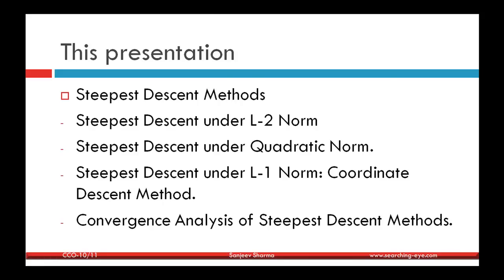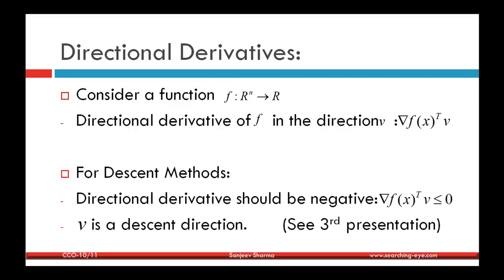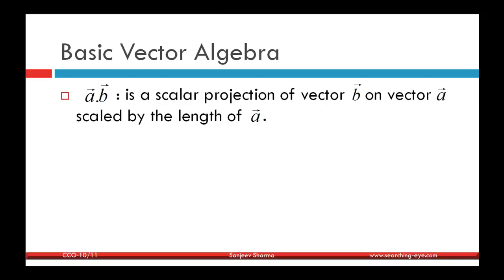Let's begin with the directional derivative. Consider a convex function f mapping from R^n into R. The directional derivative of f in direction v at point x is given as ∇f(x)^T v. For v to be a descent direction, the directional derivative should be non-positive — that is, negative. We can make this directional derivative as negative as possible by making the length of v infinite, choosing a direction that makes an acute angle with the negative gradient.